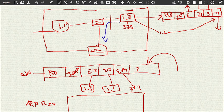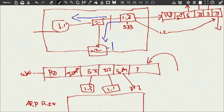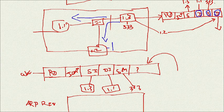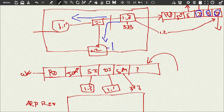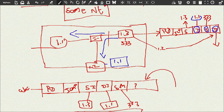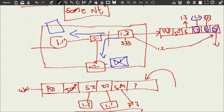The broadcast packet is sent to 1.2 and 1.1. Each PC opens and reads the packet. The destination MAC is unknown to the sender. So what is the destination IP? It is 1.1. PC 1.2 opens the packet and sees the destination IP is 1.1 - not itself - so 1.2 drops the packet. Then 1.1 takes the packet, reads it, and sees it is the destination.